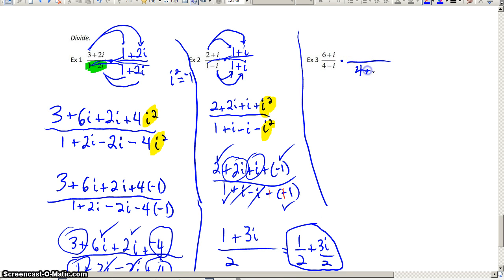Once again, same process. We're going to multiply the top and the bottom by the conjugate of the denominator. We're always doing that. And, then we will distribute in FOIL.